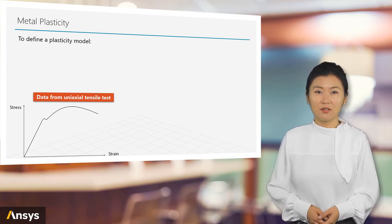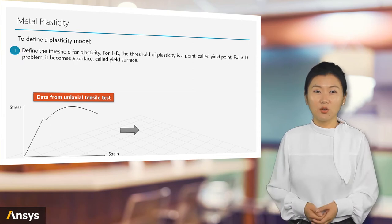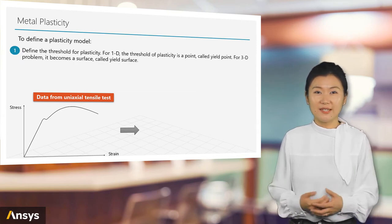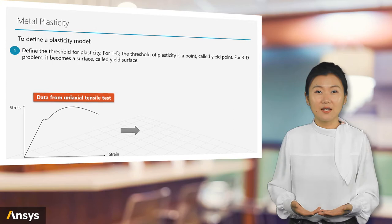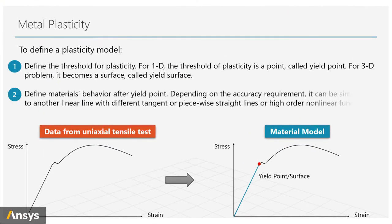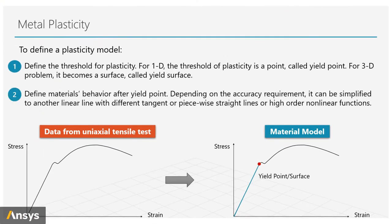To define a plasticity model, we need to define when does plasticity occur—that is the yield surface—and how does plasticity evolve—that is the hardening rule. In 1D space, the threshold of plasticity is a point called the yield point.